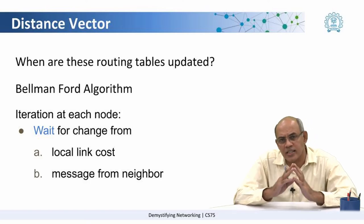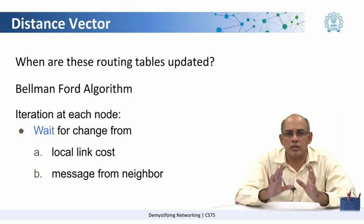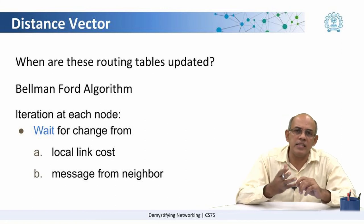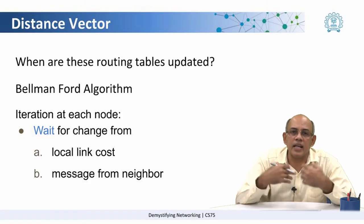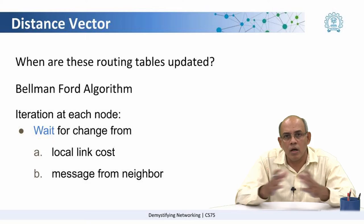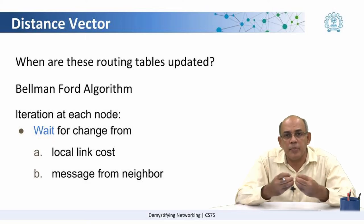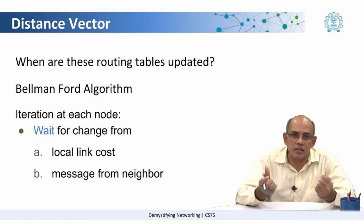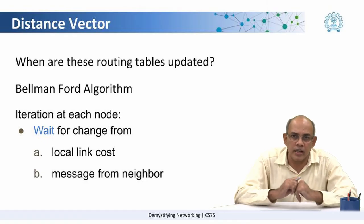In the first step, it simply waits for something to change. The change can either be local — that some link connected to me as a router has gone down — or the change can be that I received a routing table update from one of my neighbors.